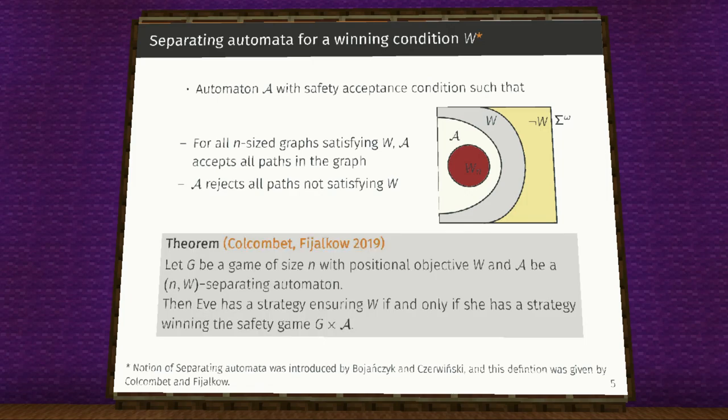The following theorem by Kolkomba and Fijalko allow us to reduce these games with positional objective W to just constructing a separating automata for W. We will construct the separating automata for combination of objectives using the separating automata for individual objectives as black boxes.